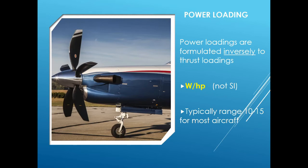Now, everything we've talked about with the thrust loading so far actually refers to jet engines. If we've got propellers, we need to talk about power. A power loading is defined, quite confusingly, as the inverse of a thrust loading, which is the weight divided by the horsepower HP. So note that those are not SI units. But typically they range somewhere between 10 and 15 for most aircraft.